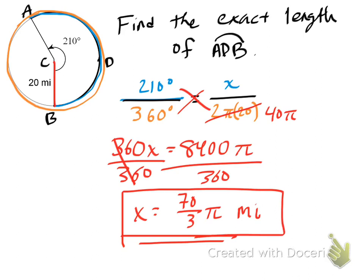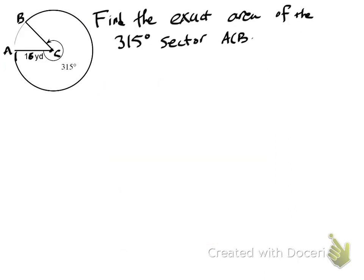Sector area is very similar, except instead of circumference describing the full circle, we're talking about the space inside, or the area. Let's look at an example of it as well. Find the exact area of the 315 degree sector ACB. So we're talking about this sort of Pac-Man space here.